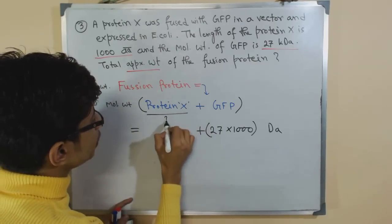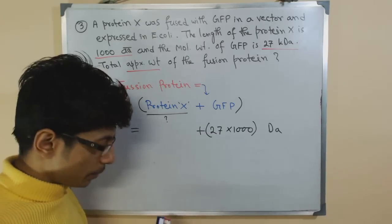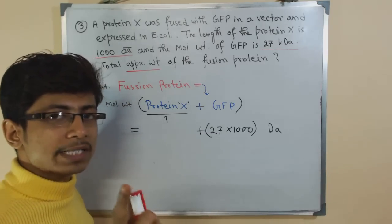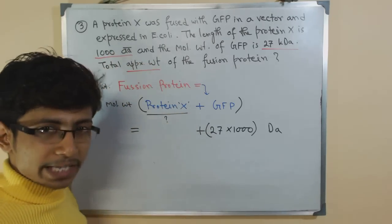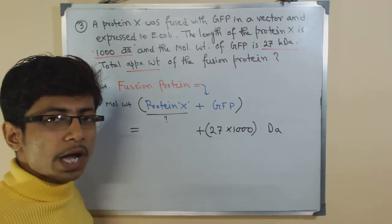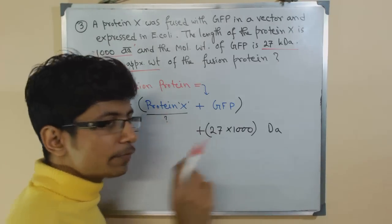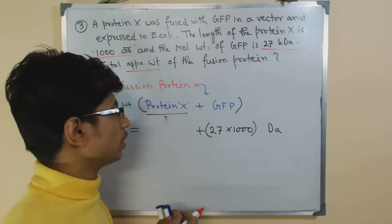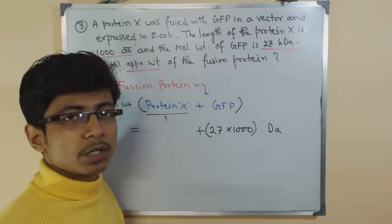But we don't know the molecular weight of protein X. Instead, what we know is the number of amino acids that is making protein X, and that is 1000. Remember in previous videos I have talked with you before that if there is no way that you can find out or if the idea is not given that the molecular weight of that amino acid that you are dealing with.